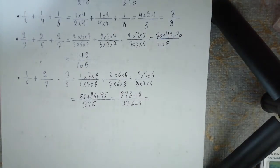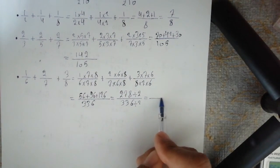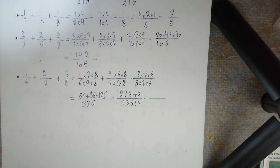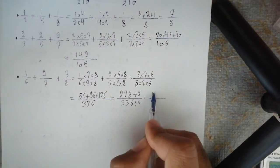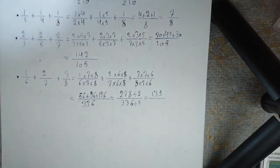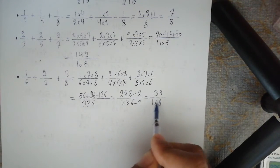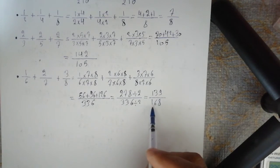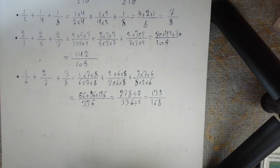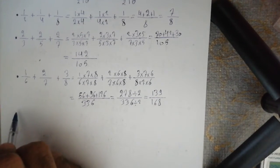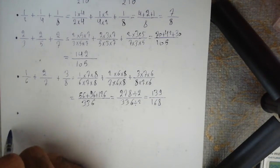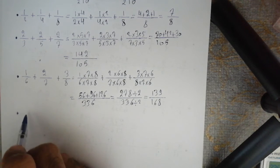Divide both components by 2: 278 divided by 2 equal to 139, and 336 divided by 2 equal to 168. Now between 139 and 168 there is no further common divisor, so the answer is 139 over 168.